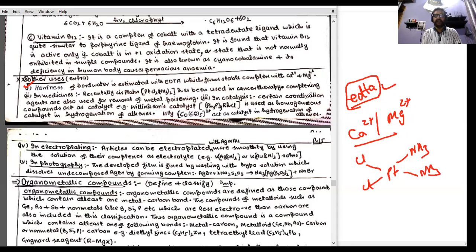In catalysis, certain coordination compounds are used. Wilkinson's catalyst, triphenylphosphine rhodium chloride, is used as a homogeneous catalyst in hydrogenation reactions. Similarly, Co₂(CO)₅ — where CO is cobalt and CO is carbon monoxide — also acts as a catalyst in hydrogenation.